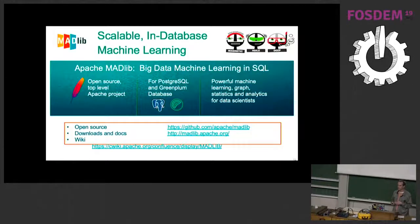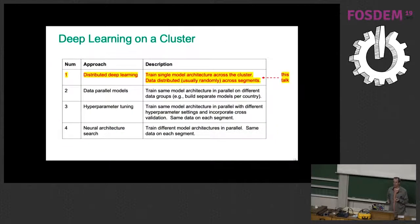Apache Madlib is in-database machine learning. The idea is that you don't want to move the data out of the database to another place, operate on it and move it back. What Apache Madlib does is it brings machine learning statistics computation to where the data live.